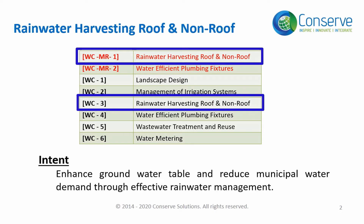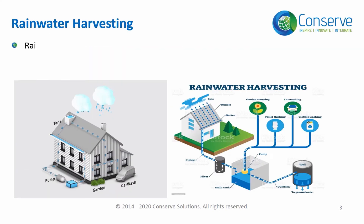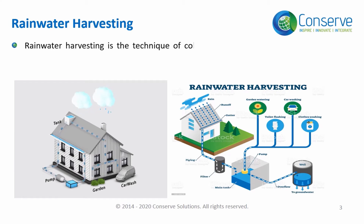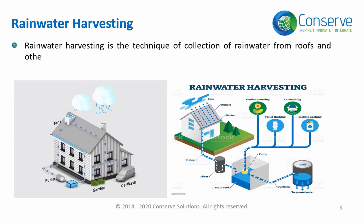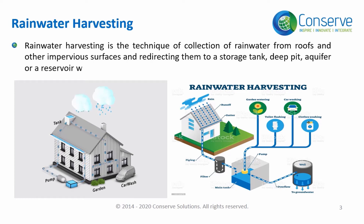Rainwater harvesting is the technique of collecting rainwater runoff or stormwater runoff from pervious and impervious surfaces, redirecting them to a storage tank, deep pit, aquifer, or reservoir with percolation.